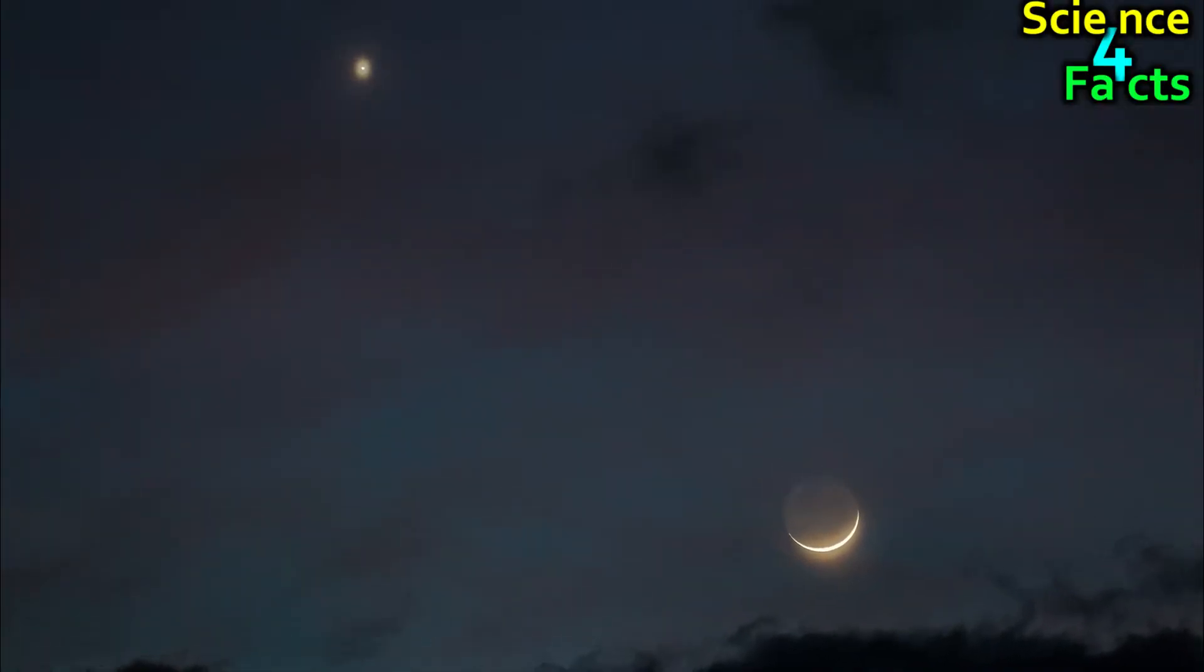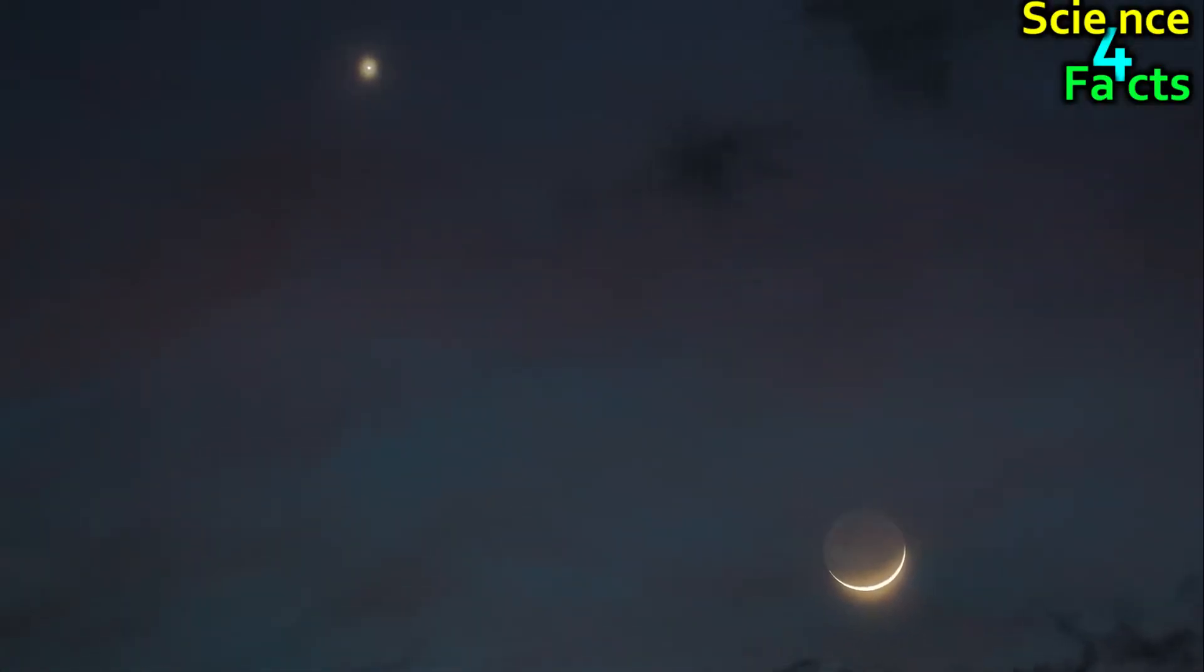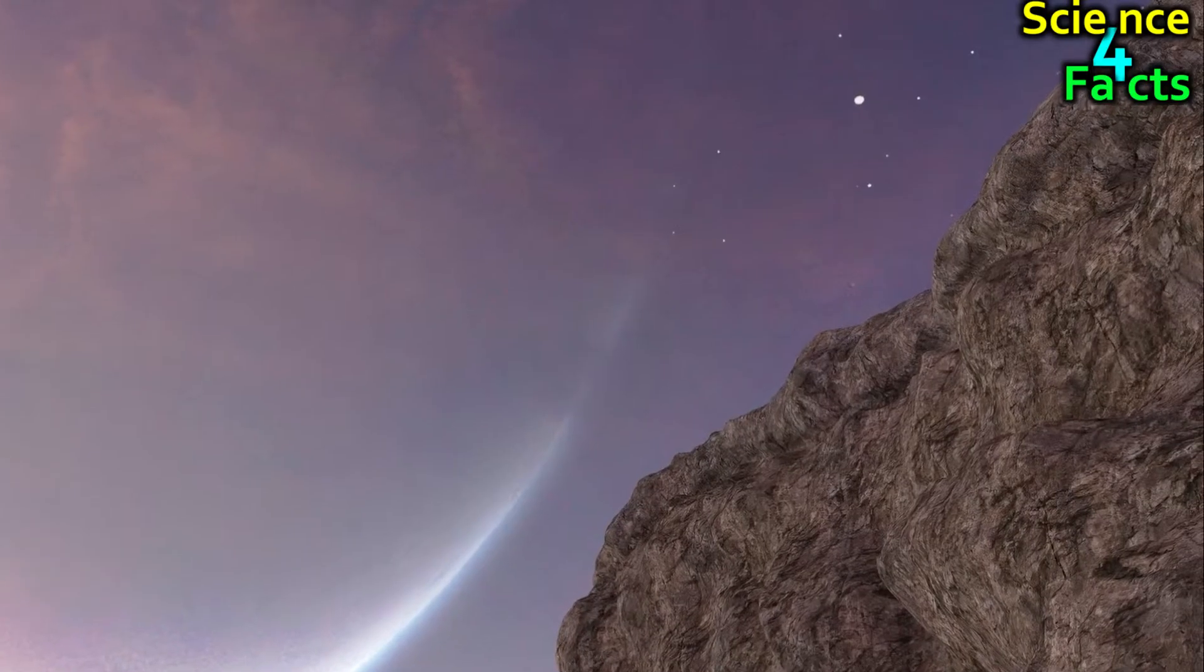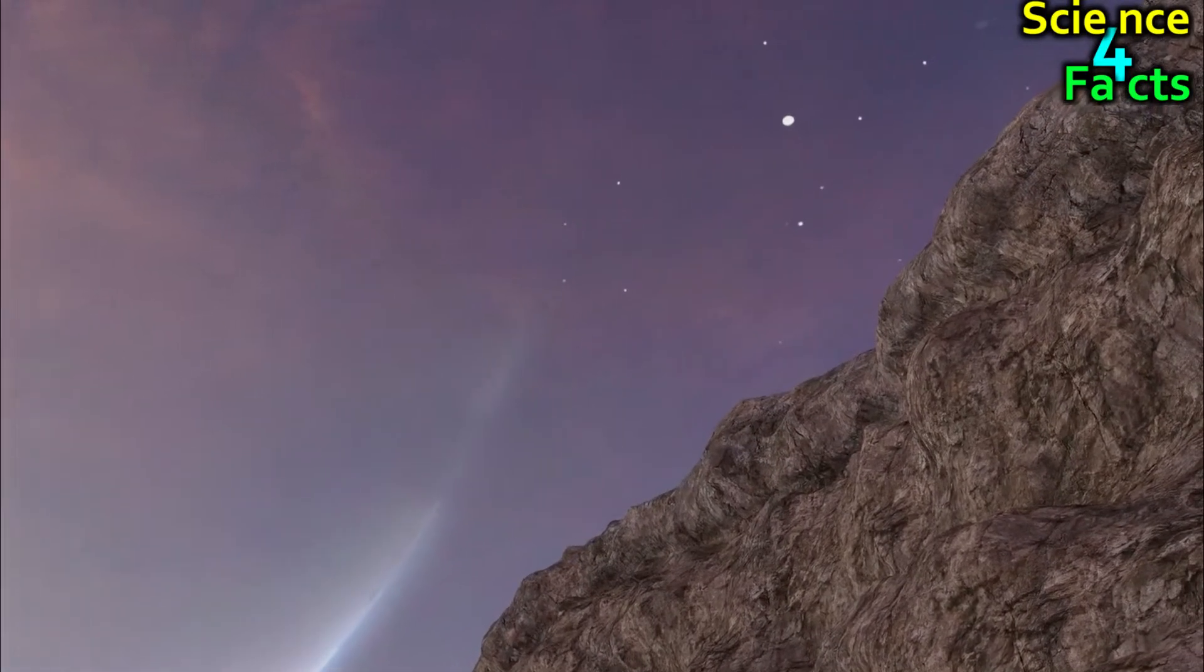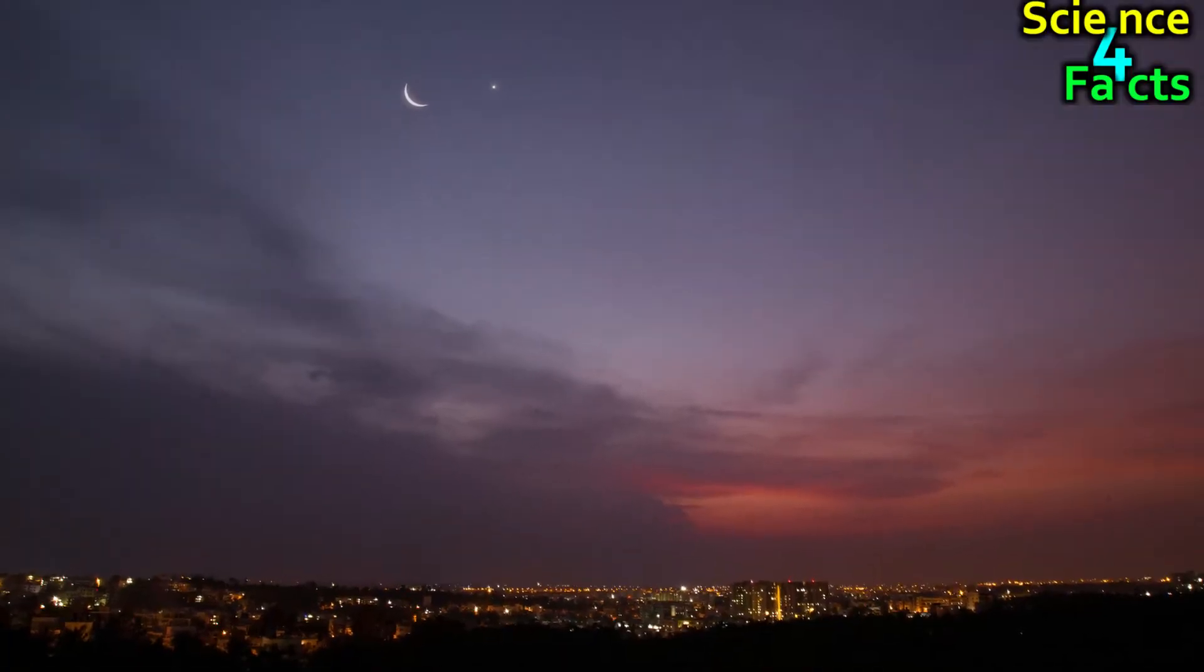After the moon, Venus is the brightest object in the night sky as seen from Earth. Even in bright daylight, Venus is visible to the naked eye. It can also cast shadows.